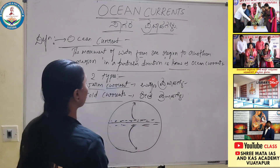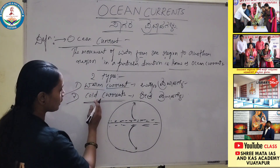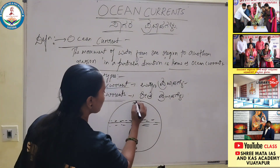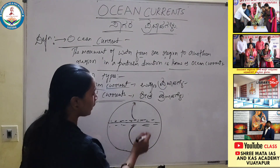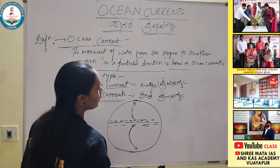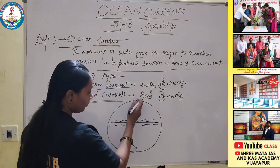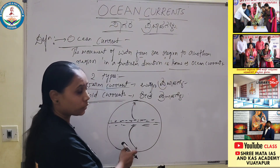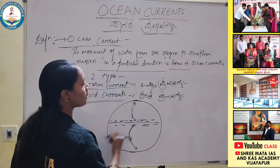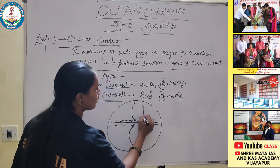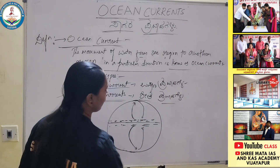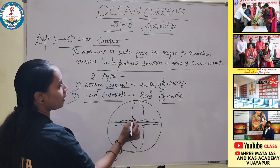Cold currents — in Kannada they are called Sheetapravahagala. Cold means Sheeta. On our Earth, the cold regions near the poles — this is the North Pole and this is the South Pole, Uttaradhruva and Dakshinadhruva. The water flowing from these cold regions towards other areas are called cold currents, Sheetapravahagala.